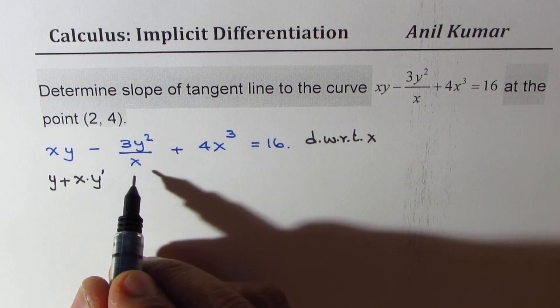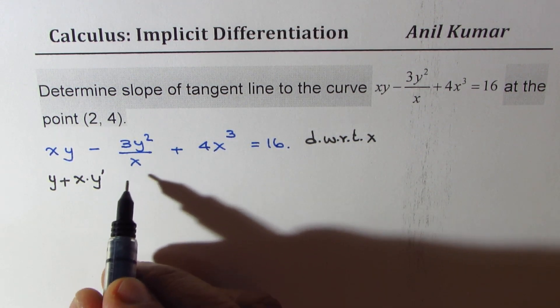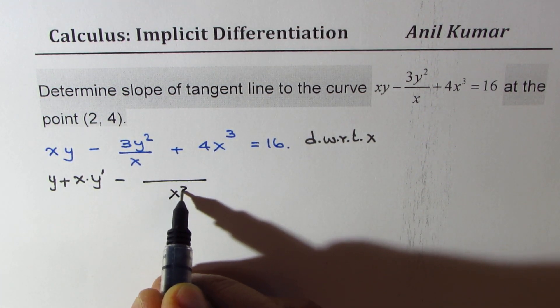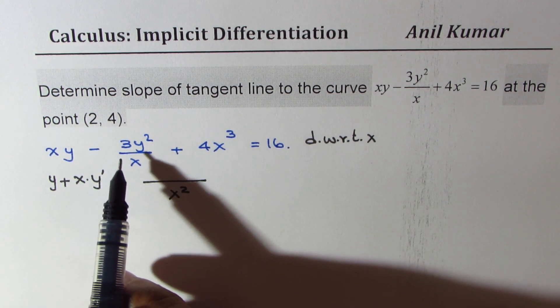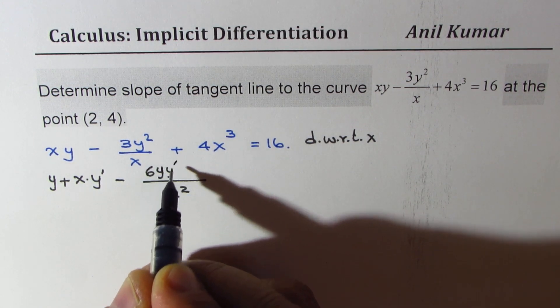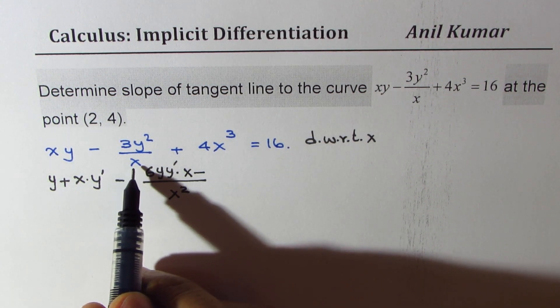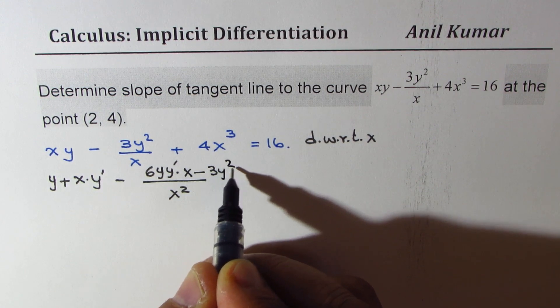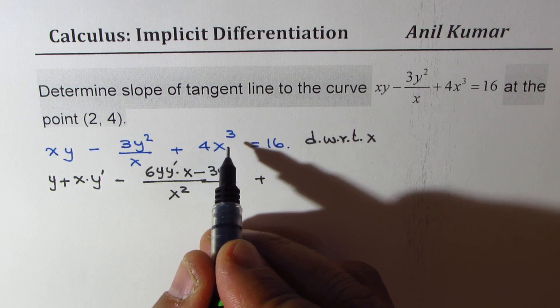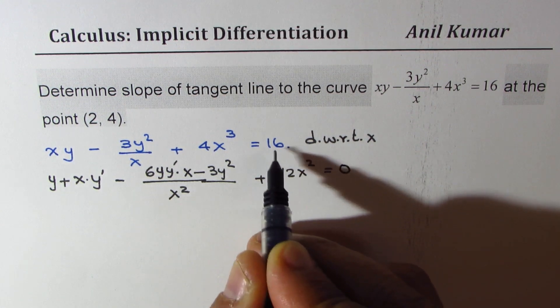Now here we will apply the quotient rule, or we could also apply the product rule, but let me apply the quotient rule. So we get here x square. Now derivative of 3y square is 6y y dash times x minus derivative of x is 1, so we get here 3y square plus 4x cube differentiated with respect to x, 12x square equals 0. This is a constant.